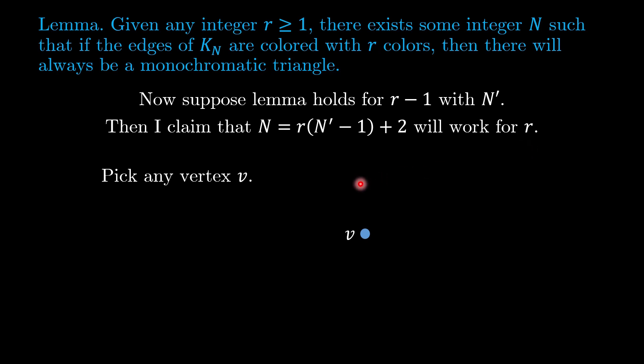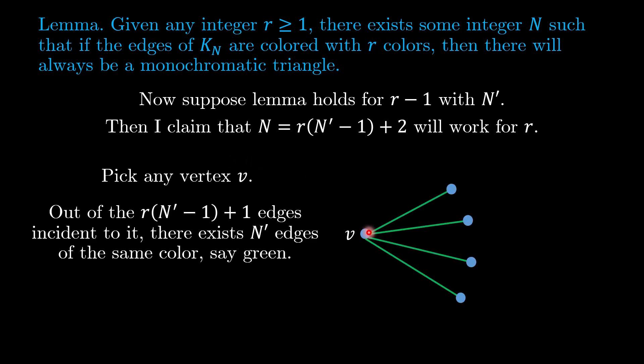To prove this, we consider any coloring, and let us pick a vertex v. Now out of all the r(N' - 1) + 1 edges that are incident to it, we can use pigeonhole principle to conclude that there exists at least N' edges of the same color.